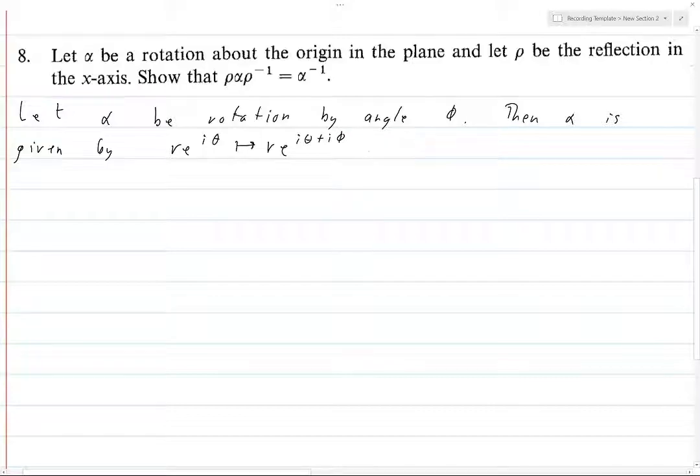And so that has inverse. What would the inverse be? It would have to send R e to i theta to R e to the i theta minus i phi. Because alpha will add the i phi, then alpha inverse will subtract and you end up where you started.